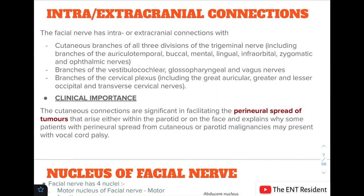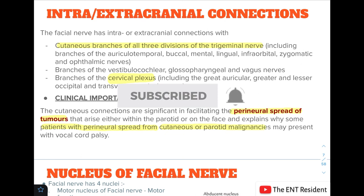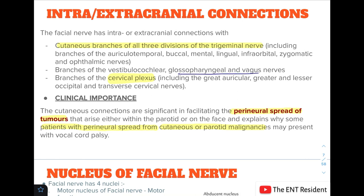The facial nerve has intra- and extracranial connections with certain nerves: cutaneous branches of all three divisions of the trigeminal nerve including the auriculotemporal, buccal, mental, lingual, infraorbital, zygomatic, and ophthalmic nerves; branches of the vestibulocochlear, glossopharyngeal, and vagus nerves; and branches of the cervical plexus including the great auricular, greater and lesser occipital, and transverse cervical nerves. These cutaneous connections are clinically important as they facilitate perineural spread of tumors arising within the parotid or on the face, and explain why some patients with perineural spread from cutaneous or parotid malignancy may also present with vocal cord palsy — due to connections with the glossopharyngeal and vagus nerves.